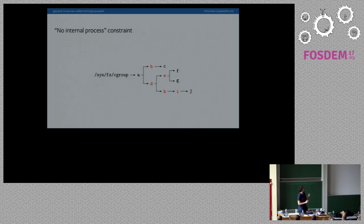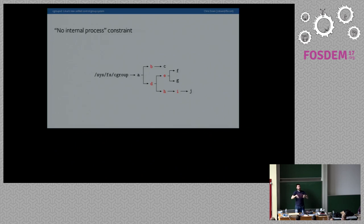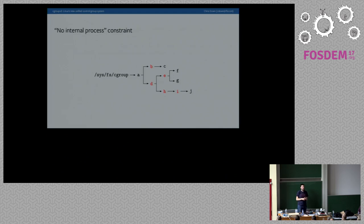Another new feature in v2 is the no internal process constraint. This means cgroups with processes and controllers enabled cannot create child cgroups. In simpler words, these cgroups either have to have no processes or have no controllers enabled in that part of the hierarchy. This is because it's hard to reason about how that should act — in v1 this was allowed, and the problem is you then have processes competing against their child cgroups. You'd have to make a judgment about how to treat processes compared to cgroups. For most cases, the better solution is just to create another cgroup. The root cgroup is a special case and controllers decide how to handle resources there.